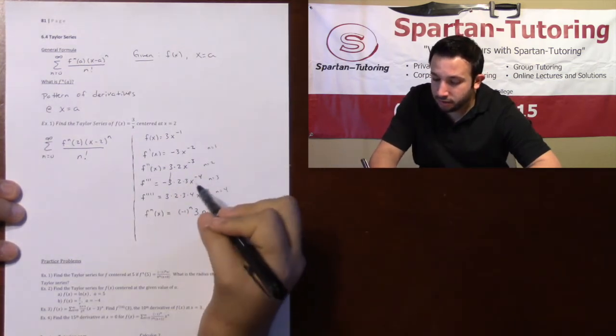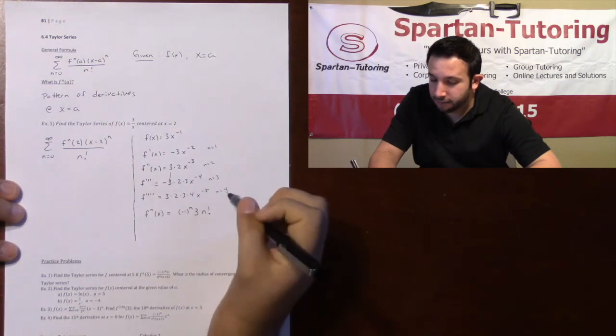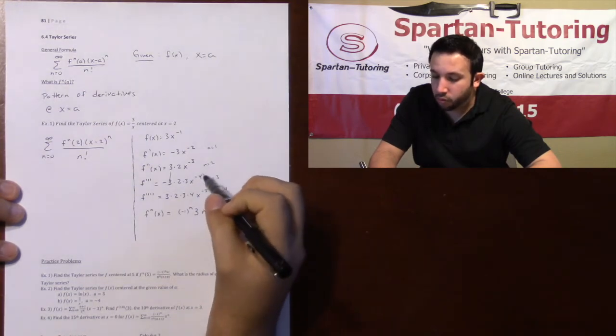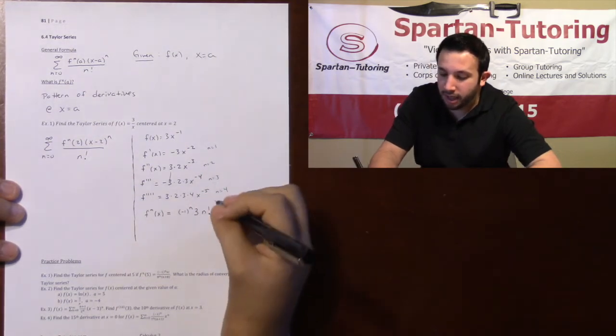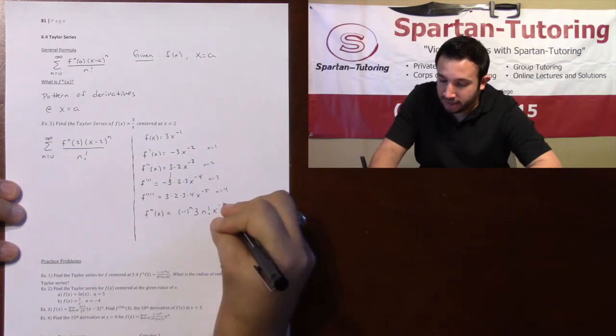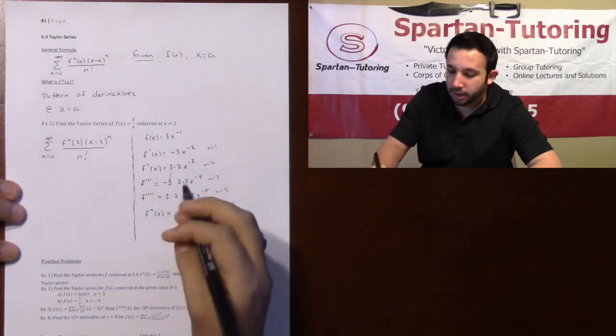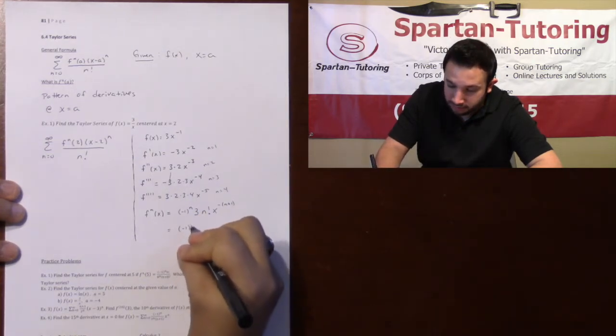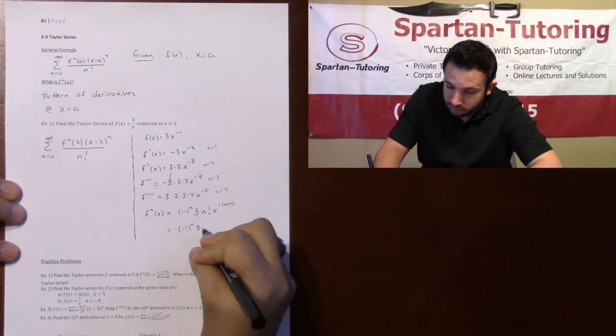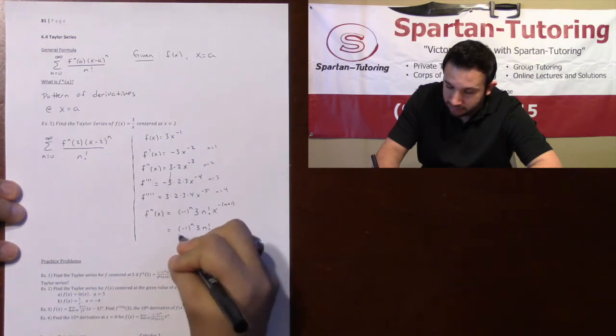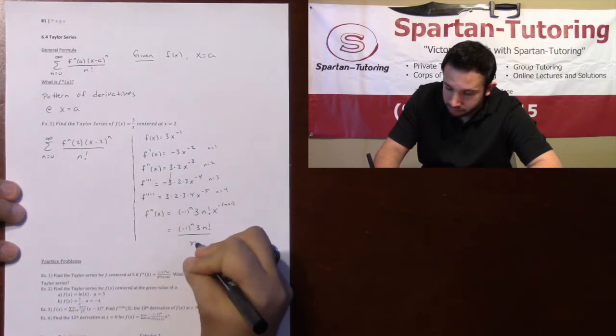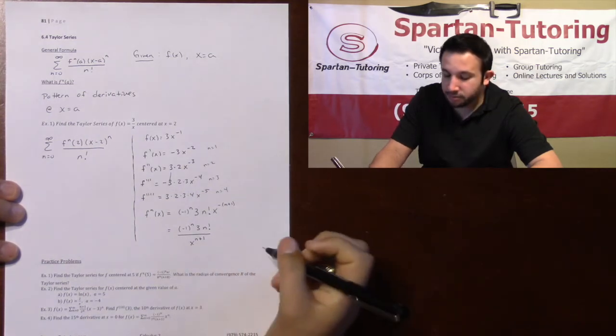And then take a look at your x's. Look at how this is x to the negative 3, x to the negative 4, x to the negative 5. Those are all one more than that n value. This will be x raised to the negative n plus 1, which, since it's a negative exponent, I can always put that on bottom to where this is negative 1 to the n times 3 times n factorial over x to the n plus 1.